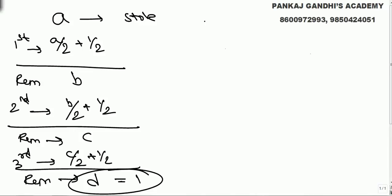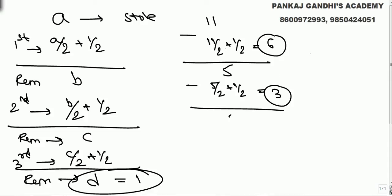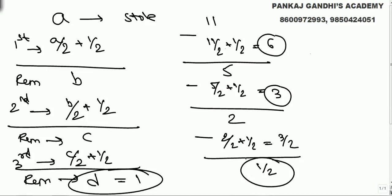For example, if in the beginning he had 11 oranges: to the first guard he gives half of 11 plus half, that is 6, remaining 5. To the second guard he gives 5/2 plus 1/2, that is 3, remaining 2. To the third guard he gives 2/2 plus half, that is 3/2, and remaining is 1/2. This is just a checking example.